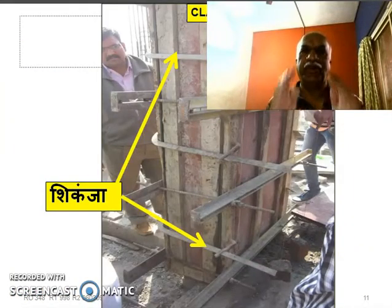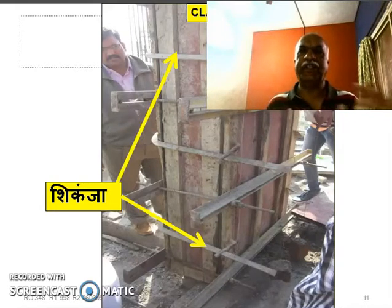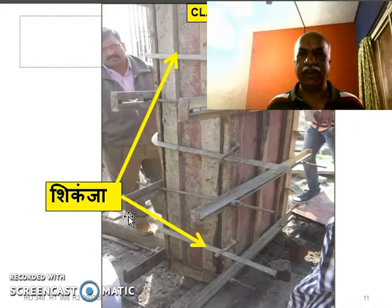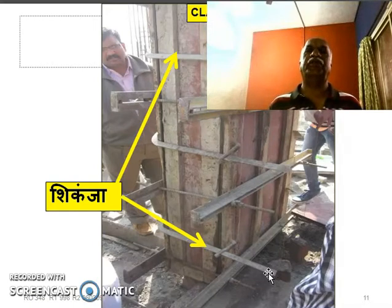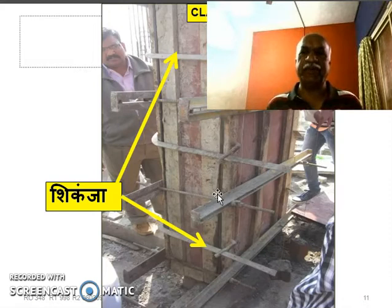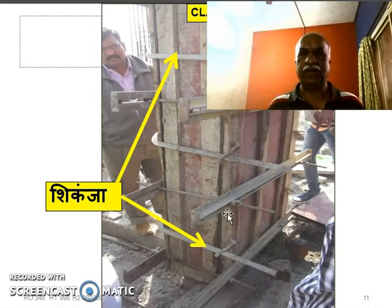This is the formwork for the column which is ready in position. You can see the sides of the columns. This thing is called shikanja. This is an MS iron clamp through which we hold the sides together, and this is called a clamp. This is a different type of shikanja — two angles face to face on either side, fixed together with tie rods.